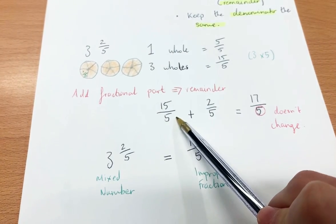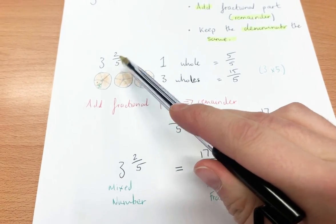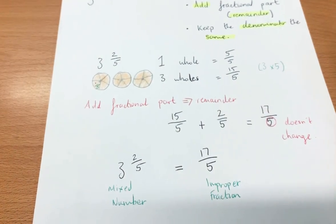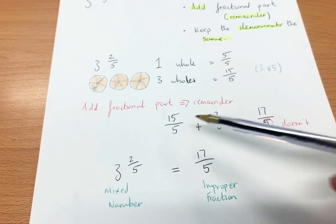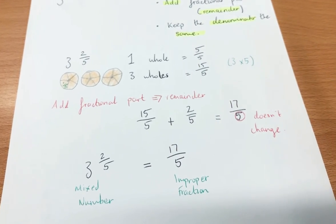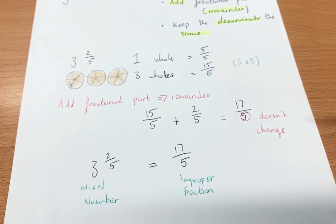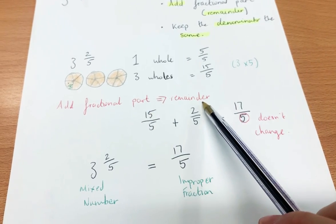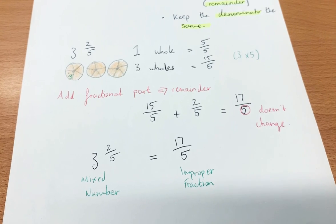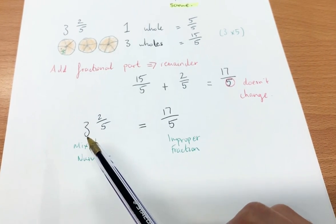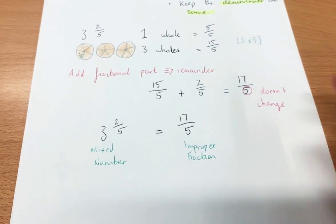So I've got 15 fifths. Now I'm going to add the remainder. My remainder or fractional part is 2 fifths. So I'm just going to add on 2 fifths to 15 fifths. When we're adding, we keep the denominator the same — only the numerator changes. So 15 fifths plus 2 fifths gives me 17 fifths. So 3 and 2 fifths is equal to 17 fifths.